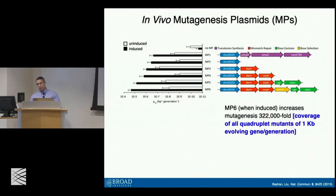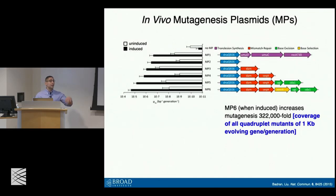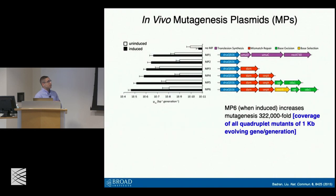The mutagenesis plasmids in PACE are small molecule-inducible plasmids that produce so-called mutator proteins in E. coli. Organized by the pathway that they disrupt, they start to affect mechanisms that E. coli uses to ensure high DNA fidelity. For us, we want to reduce that fidelity as much as possible to increase the apparent diversification of a gene of interest. To cut a long story short, we developed a whole series — all data shown with absence of induction or induction with the small molecule arabinose. For our most preferred variant, MP6, when we induce it, we see a dramatic increase in the mutagenesis efficiency — it increases the rate of mutagenesis many hundreds of thousands-fold, and for a 1KB gene of interest, this provides access to not only all single, double, and triple mutations, but also all quadruplet possible mutations.